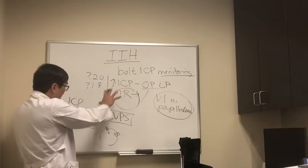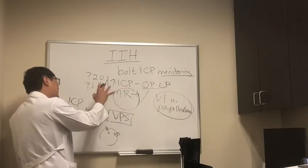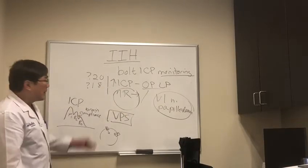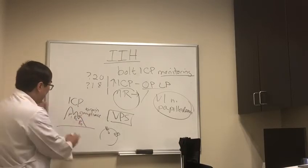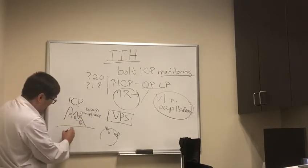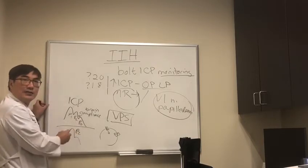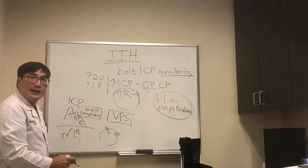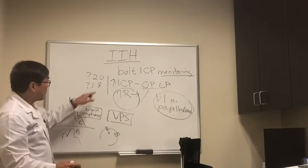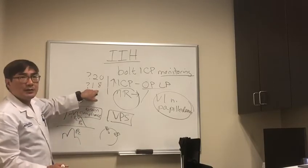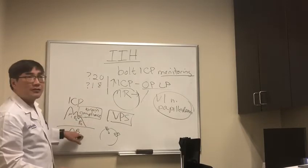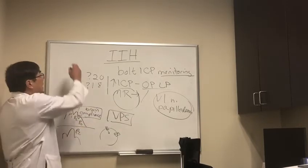When we do bolt ICP monitoring in patients who have elevated ICP but we didn't get to see it, then the P waves might look like this where the P2 is markedly elevated all of a sudden because we have something wrong with our brain compliance. That might document that the person whose spinal tap was 18 actually has a pressure of 32.